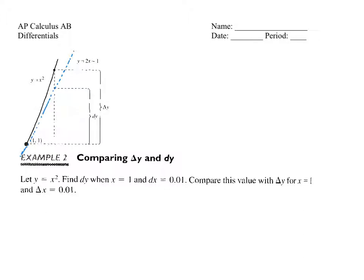But as you can see, we get off a little bit. For example, at this point there's a difference where we're slightly off. We want to identify this differential. There's a difference between delta y — which is the difference in y from one point to another on the function — and dy, the differential, which uses the notation dy and is measured on the tangent line.